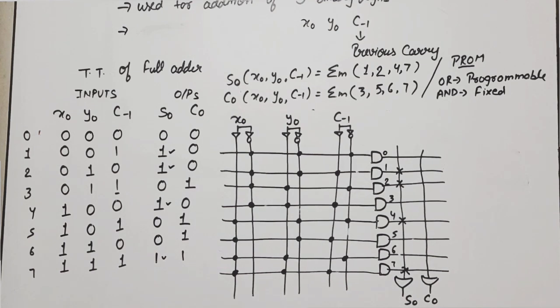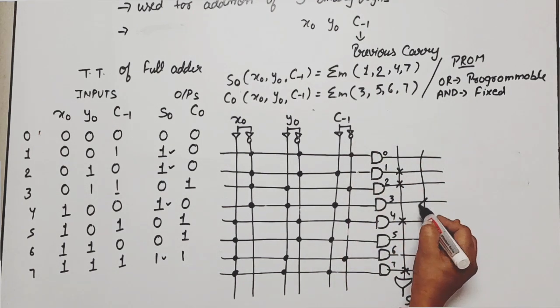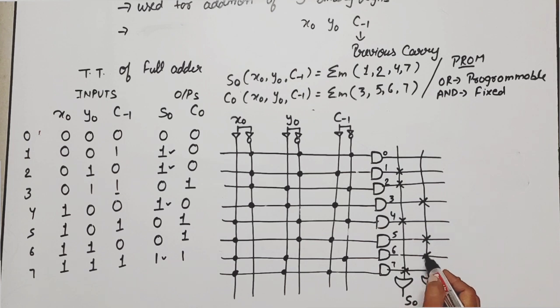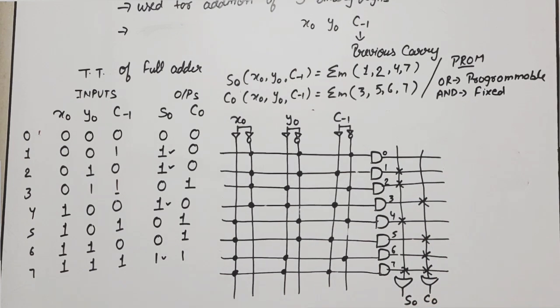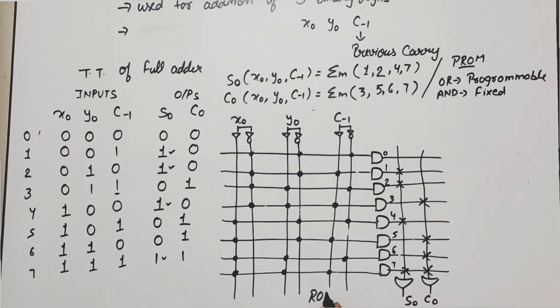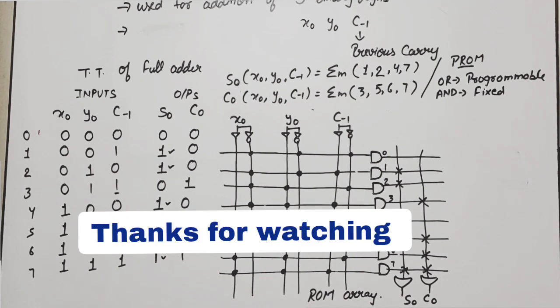Now for carry out, means carry output 3, 5, 6, 7. 3, 5, 6, 7. So this is ROM array for full adder. Thank you so much. If you still have any doubt in this diagram or this topic, then please write down in comment section. Thank you.